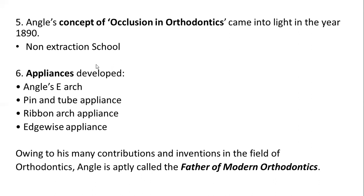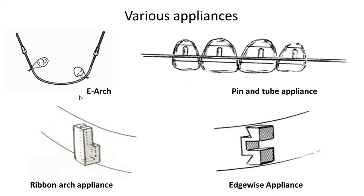Angle also developed several appliances: the Angle e-arch, the pin and tube appliance, the ribbon arch appliance, and the edgewise appliance. Owing to these contributions and inventions in the field of orthodontics, E.H. Angle is called the father of modern orthodontics. The edgewise appliance is basically the forerunner of today's straight wire appliance.